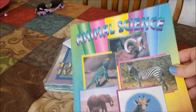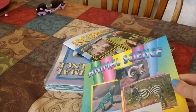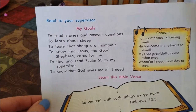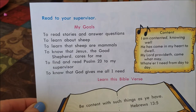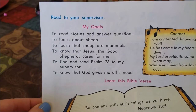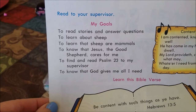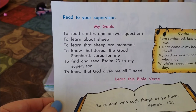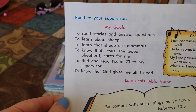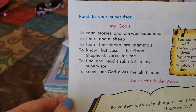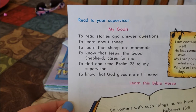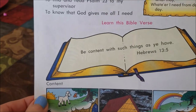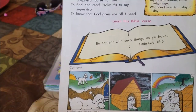This being the first one, you open it up and the child is going to read goals to you. At the beginning of each pace, every subject has this — it says right on there, 'read to your supervisor my goals.' In the goals, it tells you what you're going to learn about in this pace. The animal they're going to learn about in this animal science is sheep — mammals. They also use the King James Bible, which I think is fantastic.